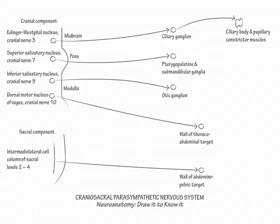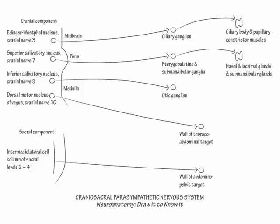The postganglionic parasympathetic fibers from the pterygopalatine ganglion terminate in the nasal and lacrimal glands. The fibers from the submandibular ganglion terminate in the submandibular and sublingual glands, and the fibers from the otic ganglion terminate in the parotid gland. All three postganglionic parasympathetic fiber groups cause glandular secretion.